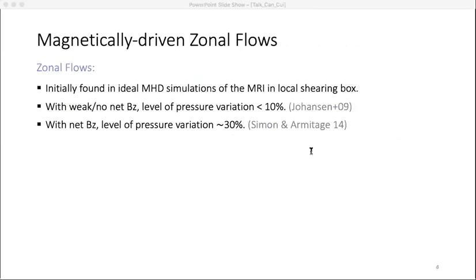So, the zonal flows were initially identified by Johansen in their local shearing box ideal MHD simulations of the MRI. Without net BZ or with weak BZ, they find the level of pressure variation is less than about 10 percent. When there is net BZ, the level of pressure variation is amplified to about 30 percent, and the variation of pressure is closely related to the concentration of magnetic flux.